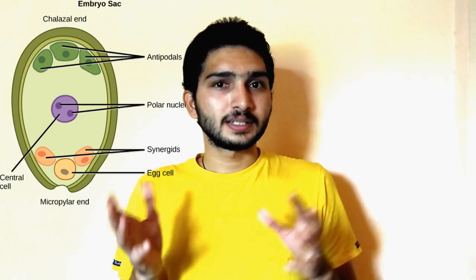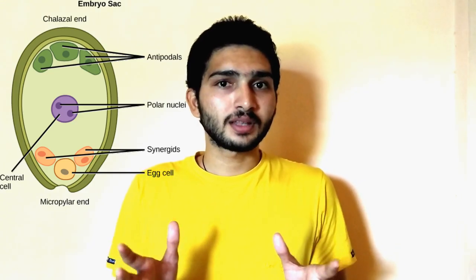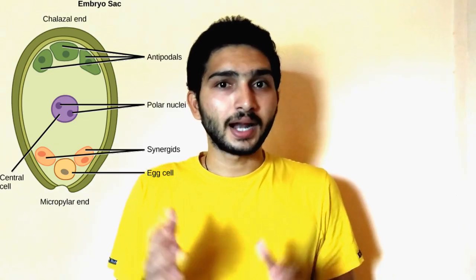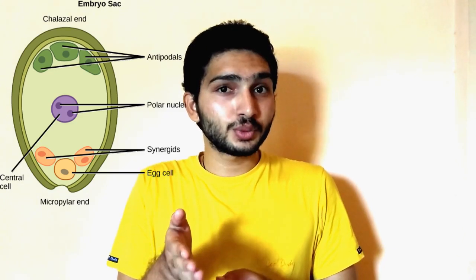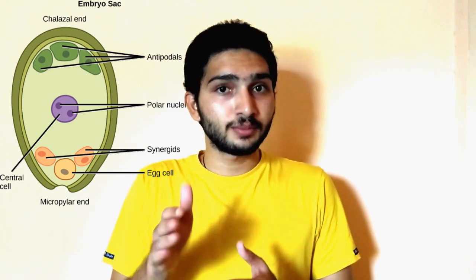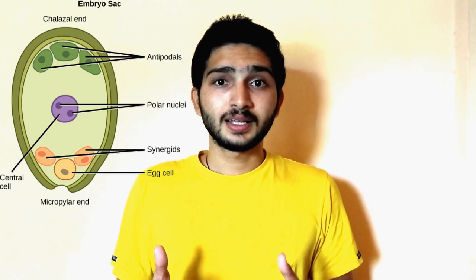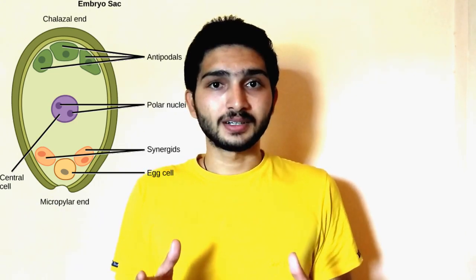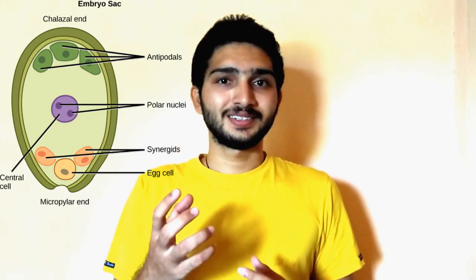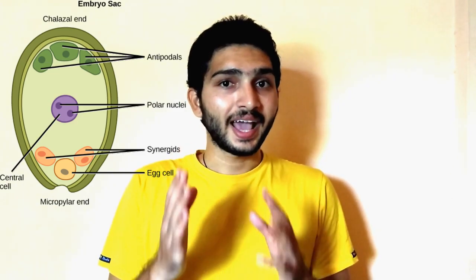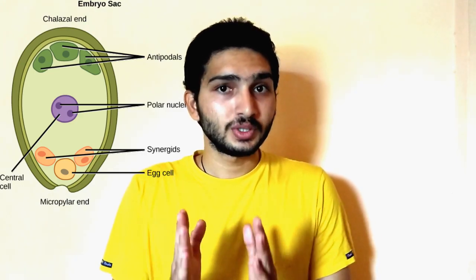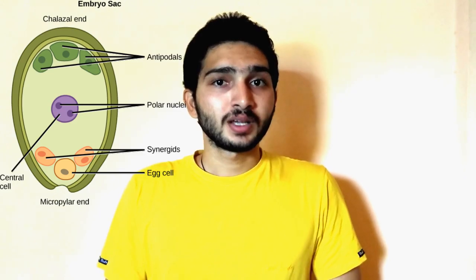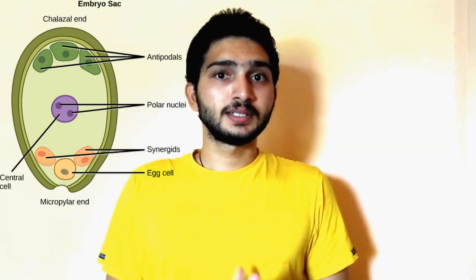The synergids help in the absorption of nutrients and they guide the pollen tube which enters into the embryo sac. These synergids are placed on the anterior side, which exactly touches the micropylar side of the ovule.